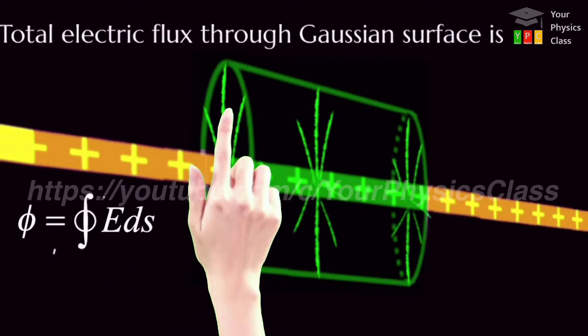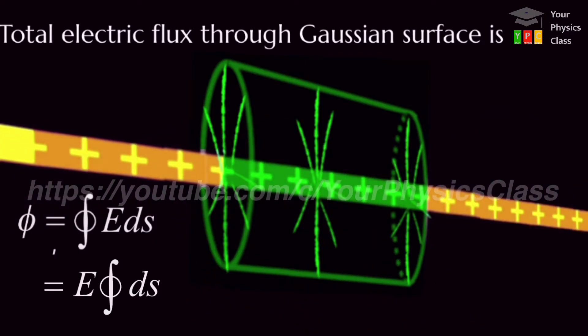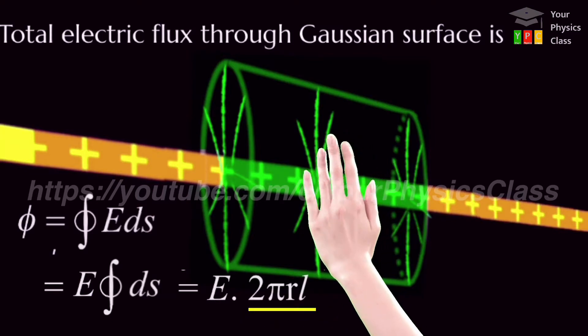Friends, E on the gaussian surface is constant because E is distance dependent. Integration of ds has a value 2 pi r l. This is curved surface area of gaussian cylinder.